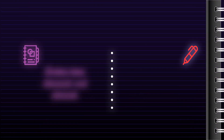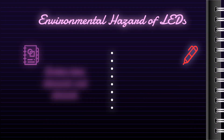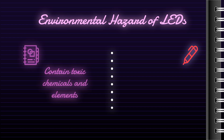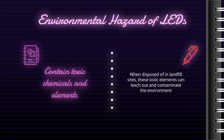Despite the good impacts, there are also negative impacts. Some LED are very harmful to the environment, as they contain toxic chemicals and elements, including mercury. This means that when disposed of in landfill sites, these toxic elements can leach out and contaminate the environment. They therefore need to be disposed of in a particular way, meaning they need to be collected by specialist waste carriers.